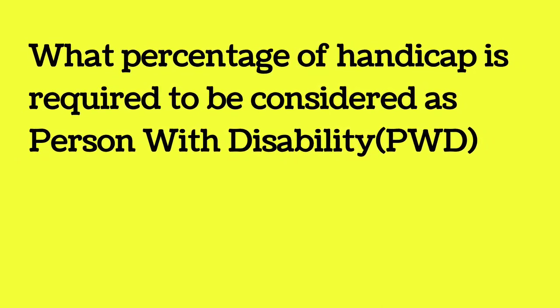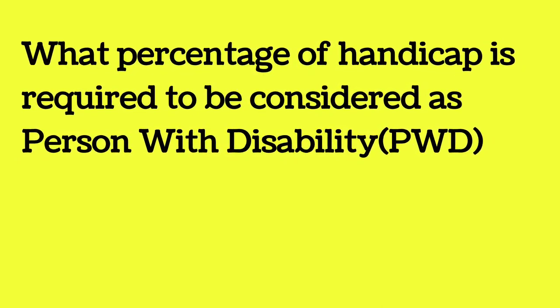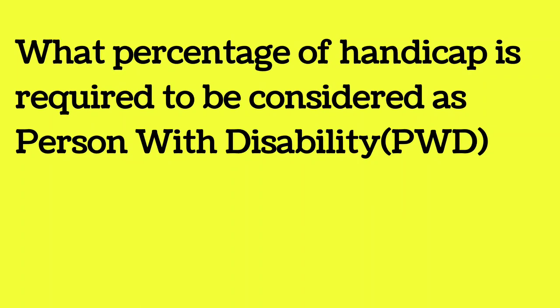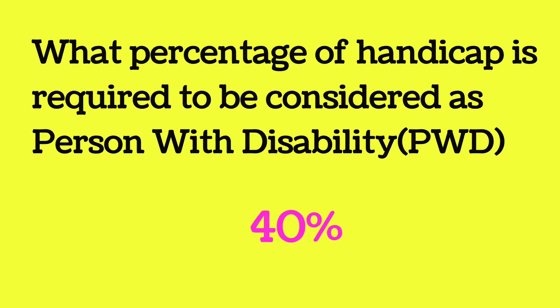What percentage of handicap is required to be considered as a Person with Disability (PWD)? The answer is 40%.